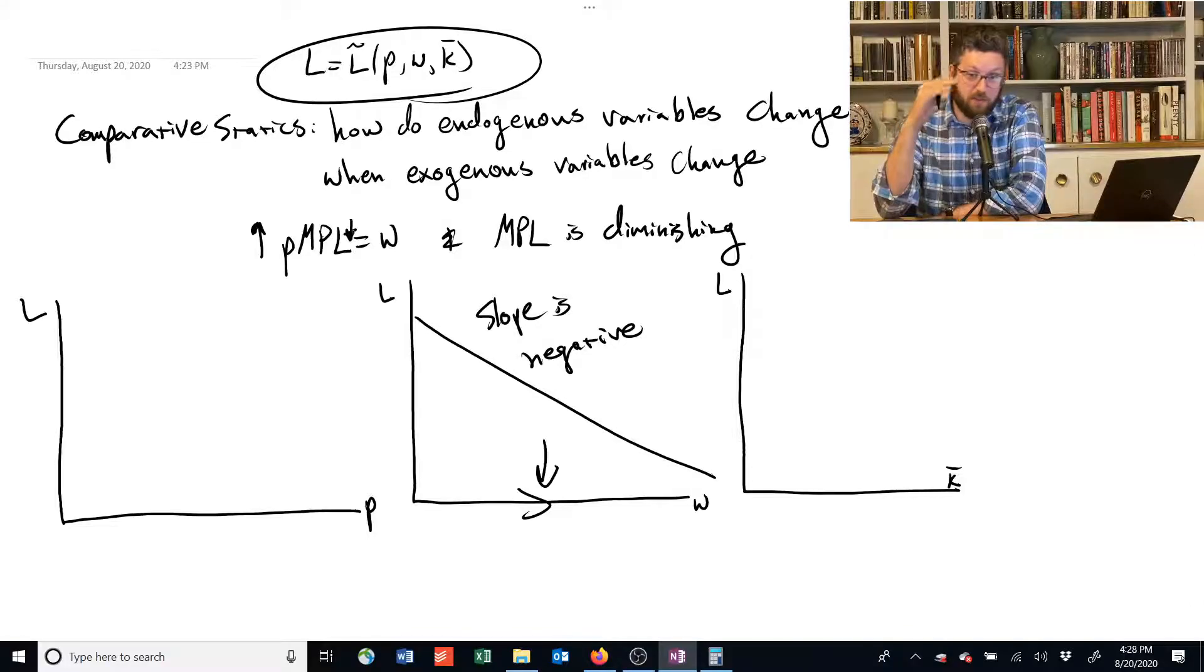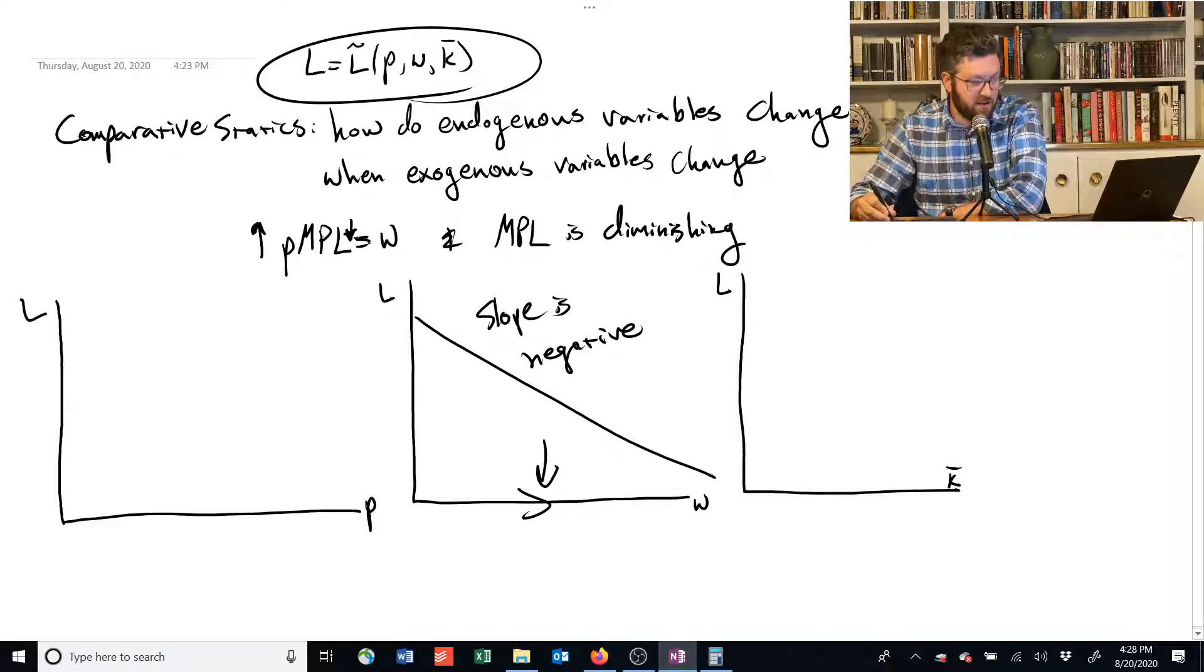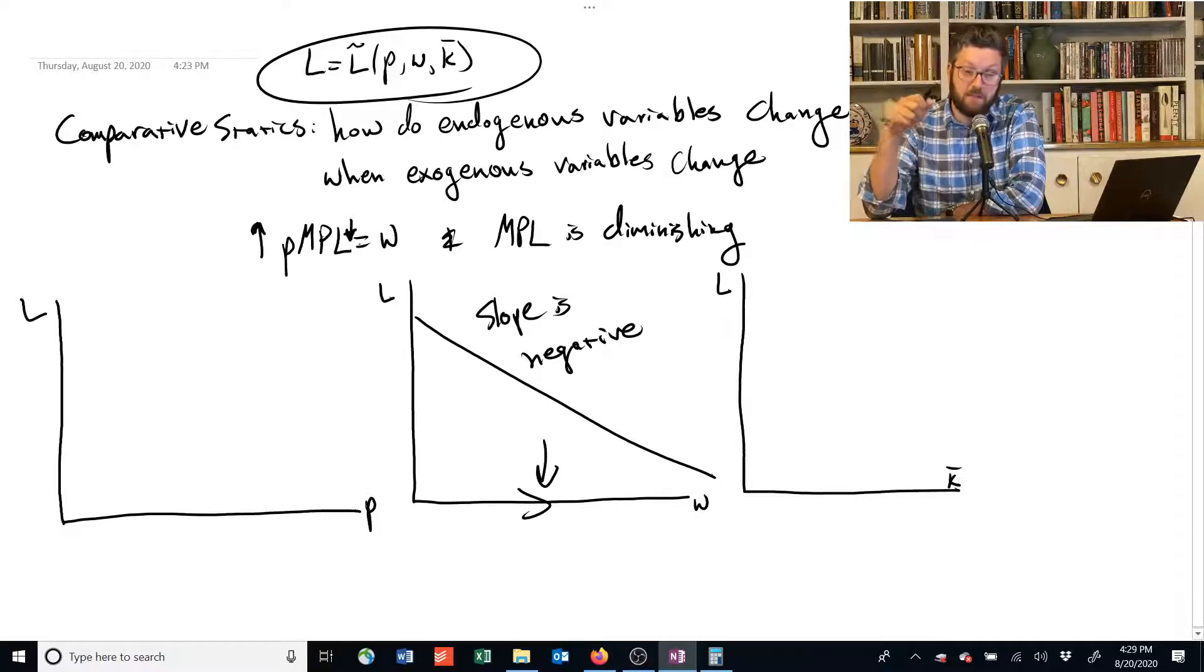if it stays the same and the price rises, then we're going to be in a situation where the left-hand side is greater than W. And we need it to be equal to W. So if you have to reduce the marginal product of labor, and the marginal product of labor is diminishing, that means you need more labor.